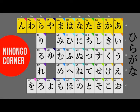Deretan huruf paling atas ini semua mengandung bunyi A, yaitu: A, Ka, Sa, Ta, Na, Ha, Ma, Ya, Ra, Wa, dan N. Deretan ini sebaiknya kita hafalkan, karena deretan huruf paling atas ini menjadi patokan untuk bunyi-bunyi huruf lainnya.